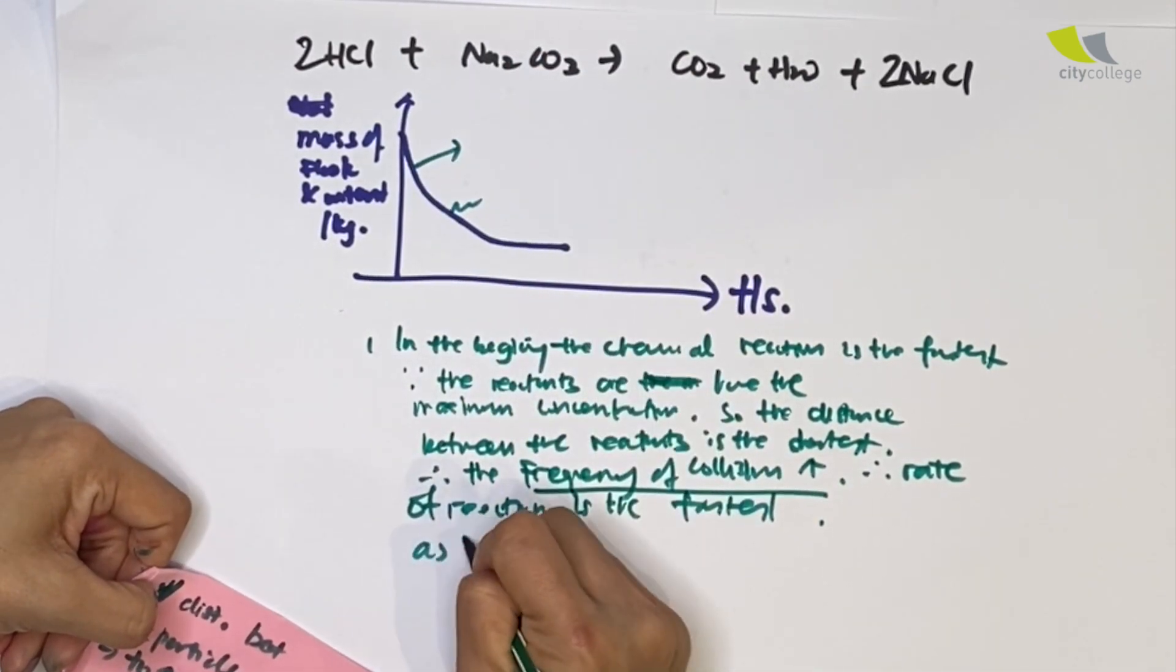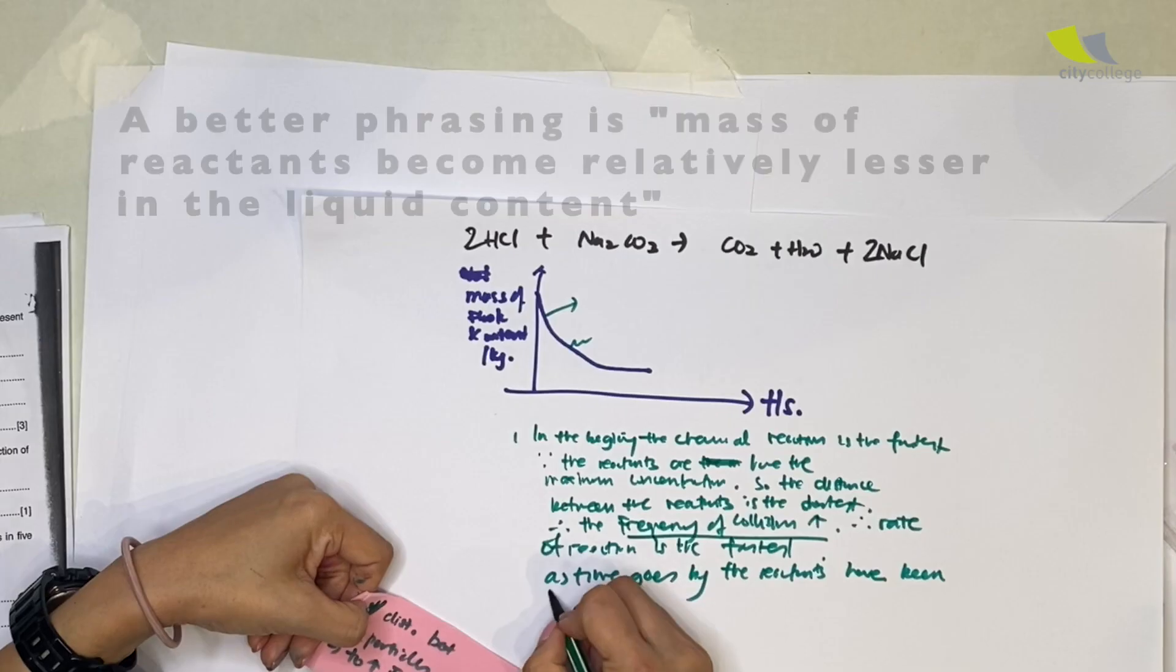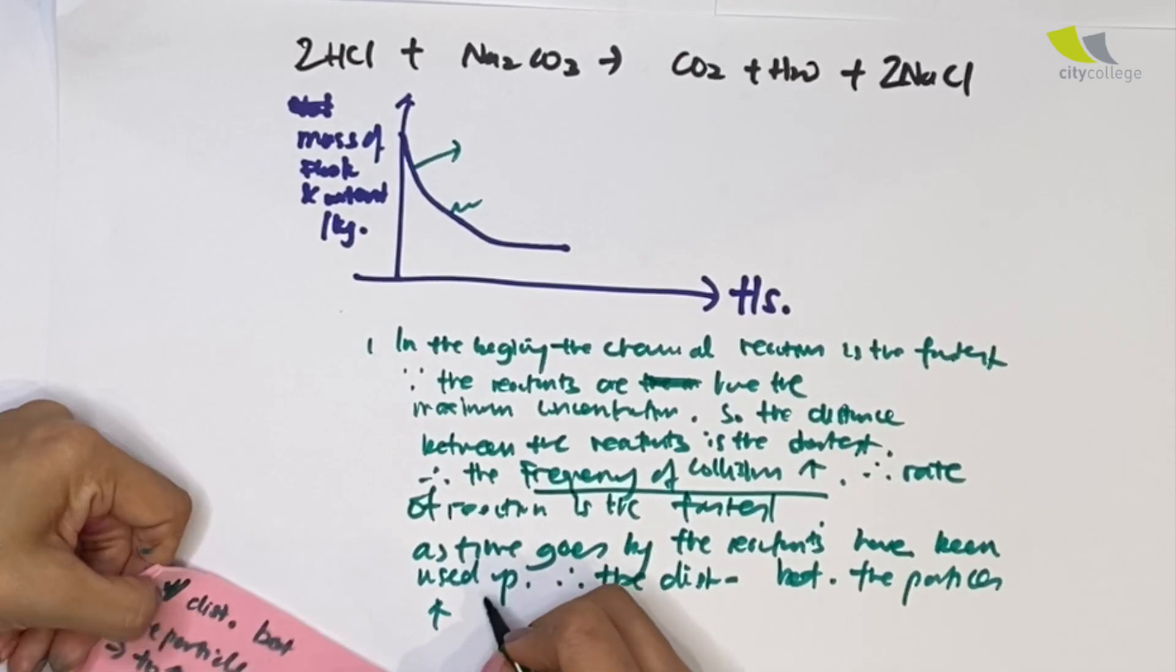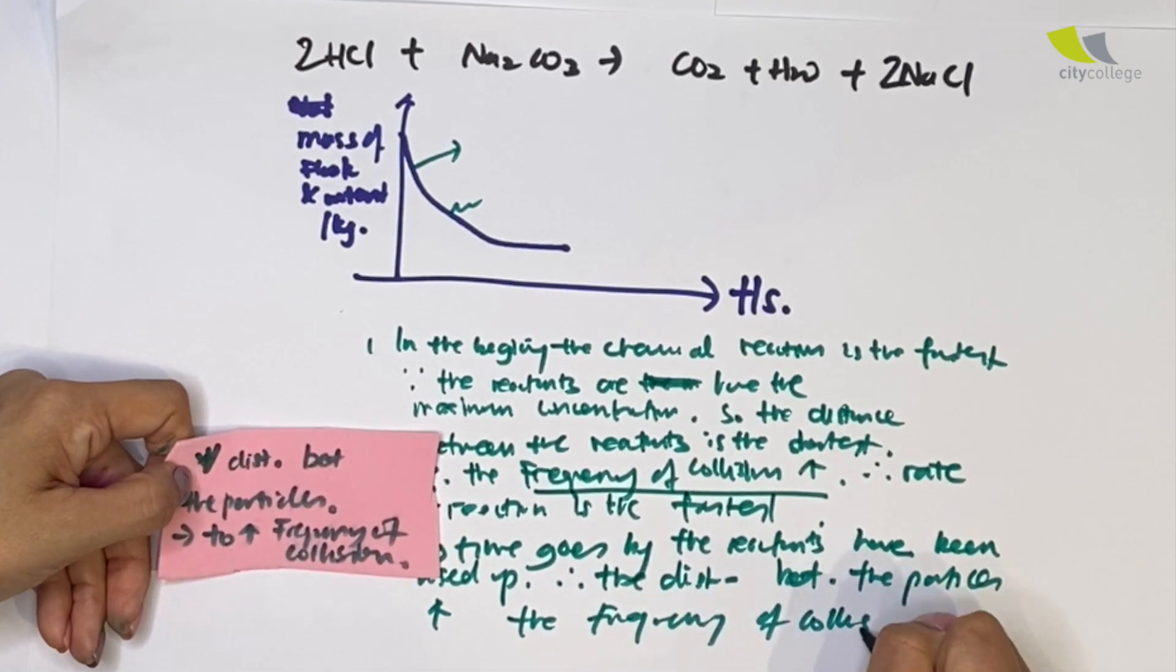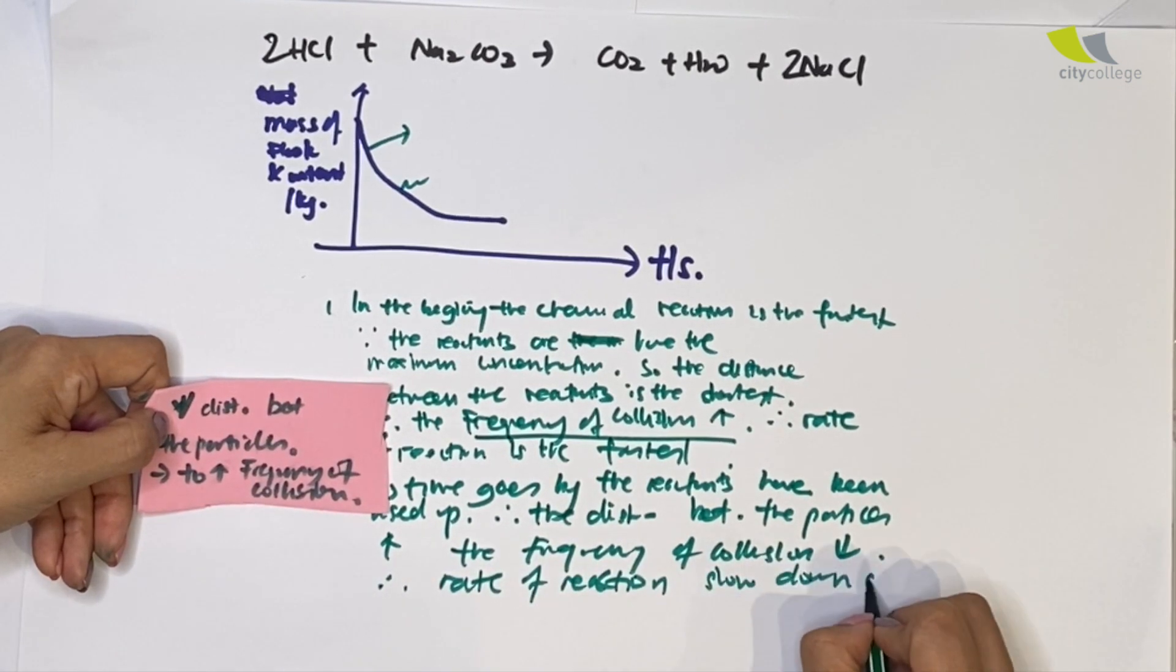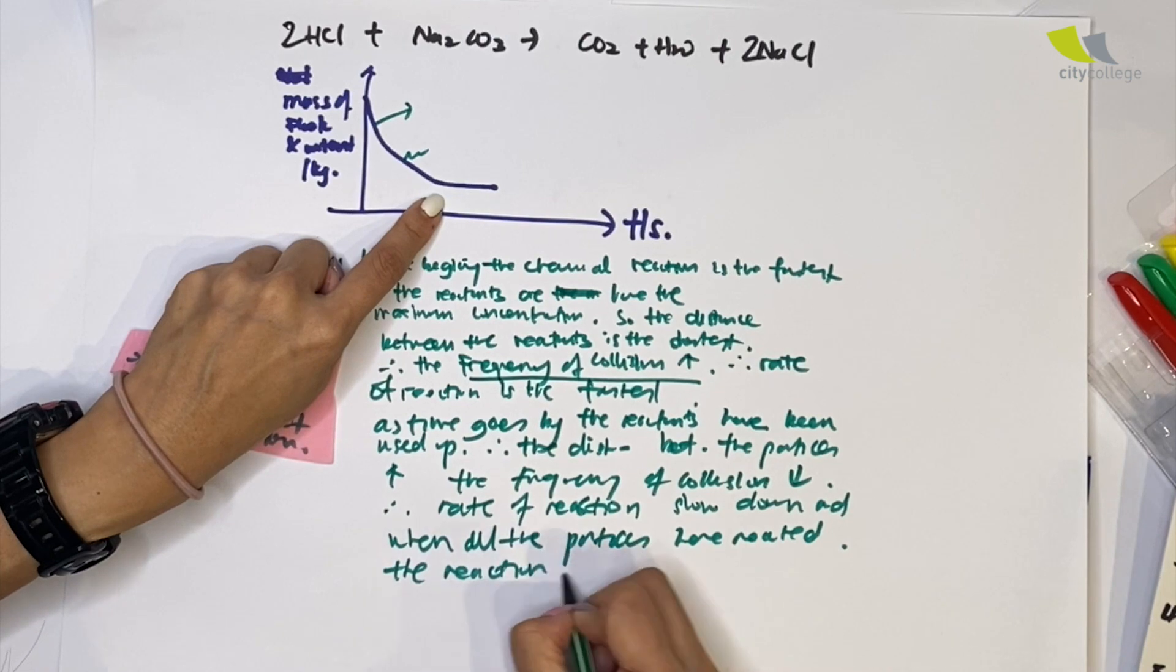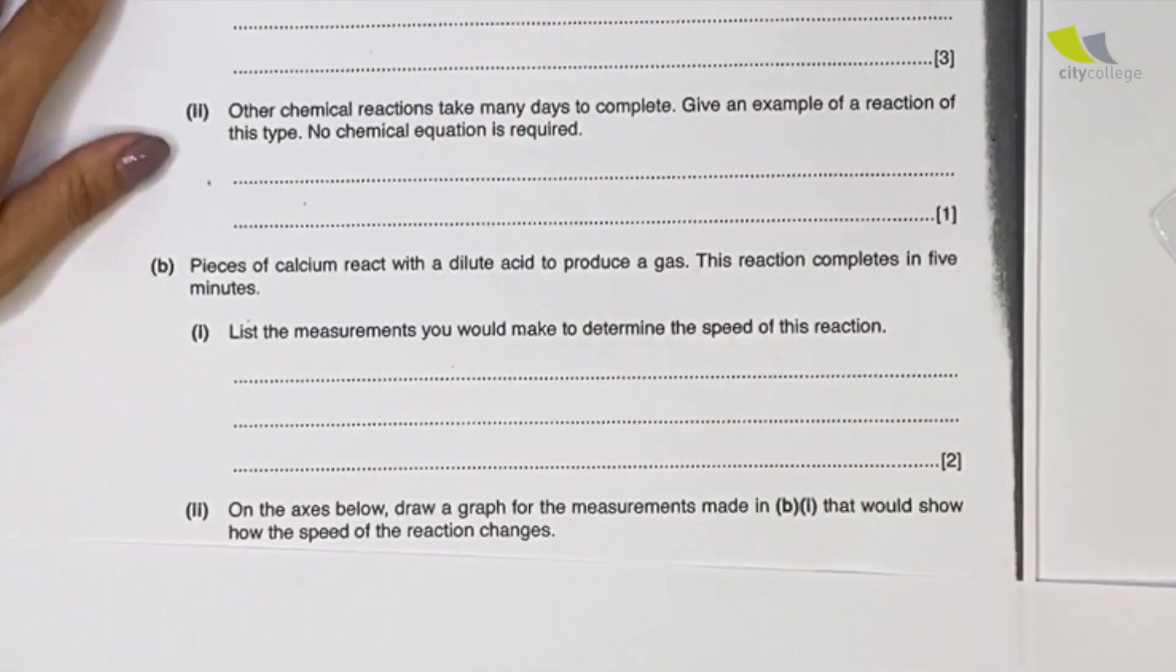But as time goes by, the reactants have been used up. Therefore, the distance between the particles increases. When they are further away, the frequency of collision decreases, therefore rate of reaction slows down. And when all the particles have reacted, the reaction stops. Okay, we finished this.